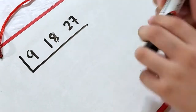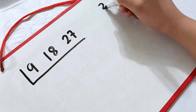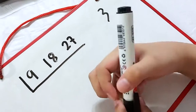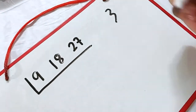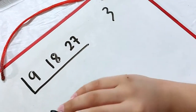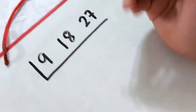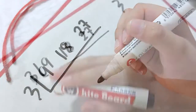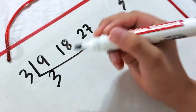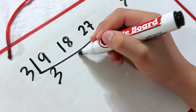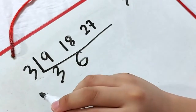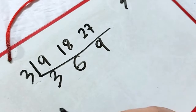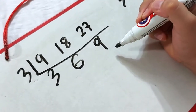For now, I'm thinking of the prime number 3. 9, 18, and 27 can all be divided by 3. So, we write 3 here. Then, let's divide. 9 divided by 3 is 3, 18 divided by 3 is 6, and 27 divided by 3 is 9. So, the resulting numbers are 3, 6, and 9.